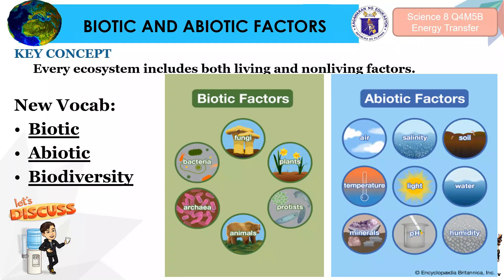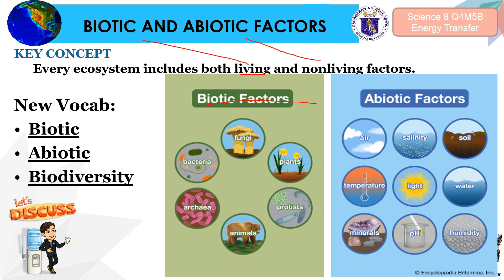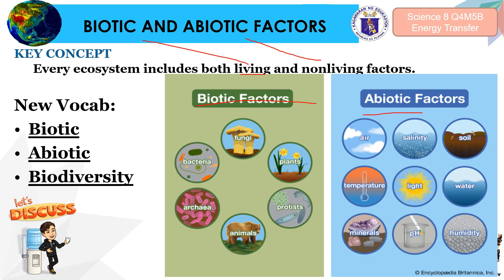An important thing to remember about the ecosystem is that it includes both living or biotic factors and non-living or abiotic factors. When we talk about biotic factors, this includes all the living organisms based on the Six Kingdom classification, which includes bacteria, fungi, plants, protists, and animals.